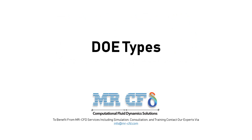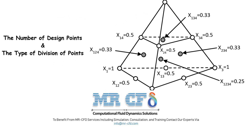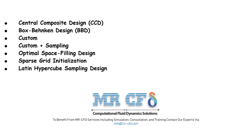Several methods are used to produce the DOE. These methods determine the type of division of the change intervals for each of the input factors or parameters. In fact, each of these types of DOE, using its own method, shows the number of design points and the type of division of the points. These methods are related to the DOE in ANSYS Workbench software.